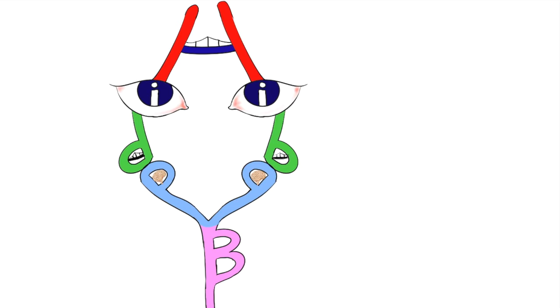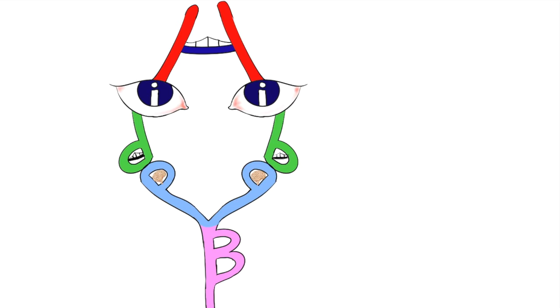Now here I have drawn a picture. You can see this portion looks like the letter A, which will remind you of the anterior cerebral artery. This bridge-like communication between these two lines will remind you of the anterior communicating artery.